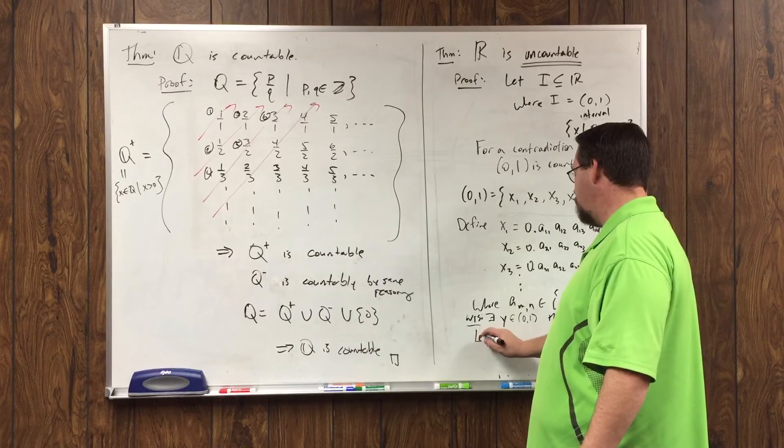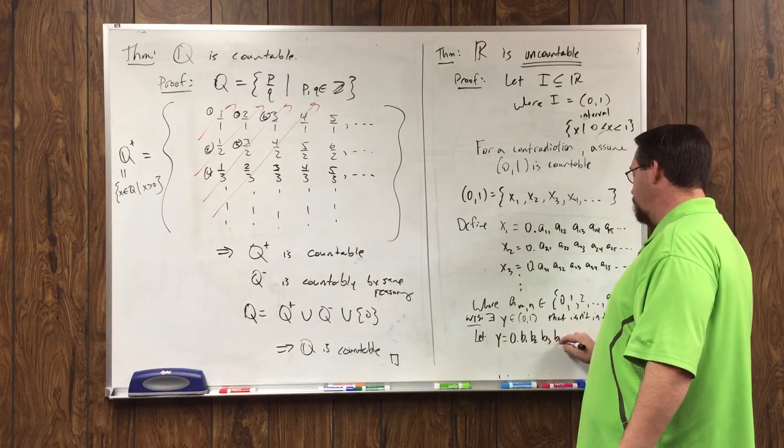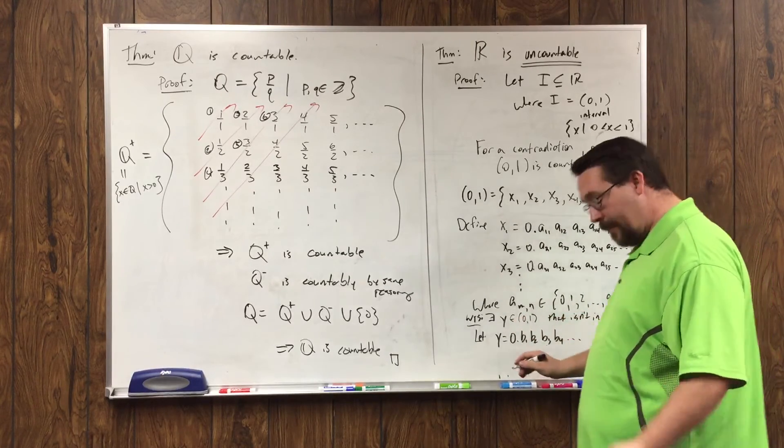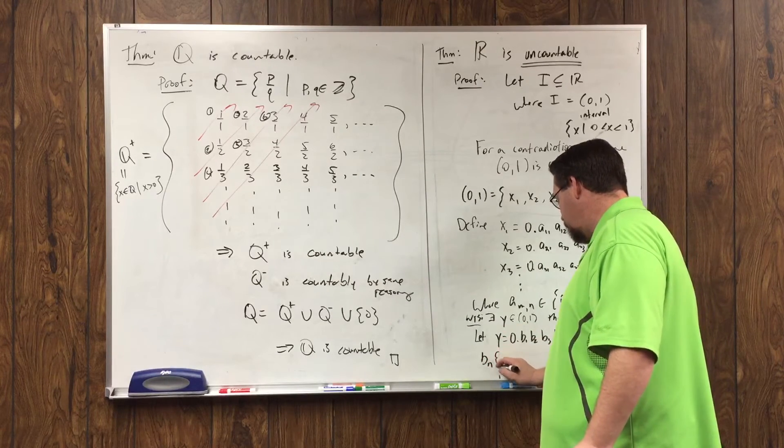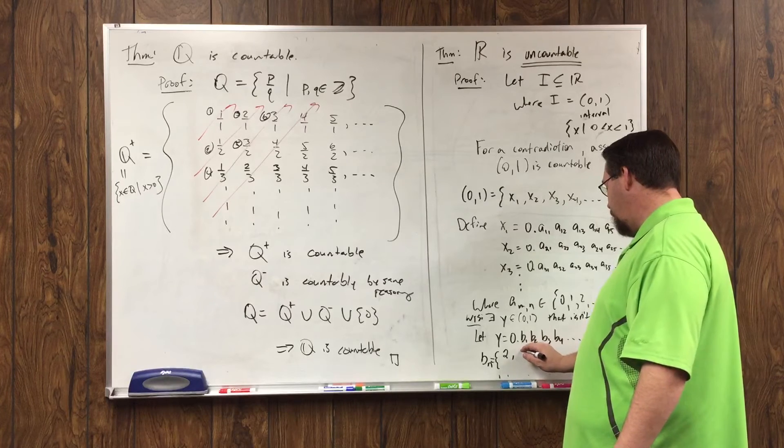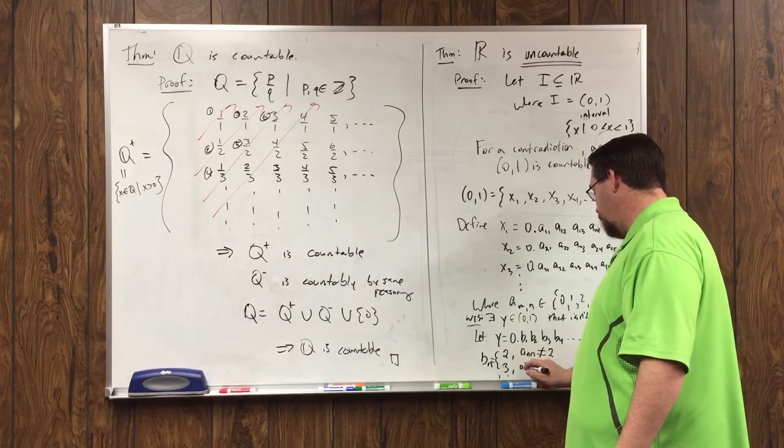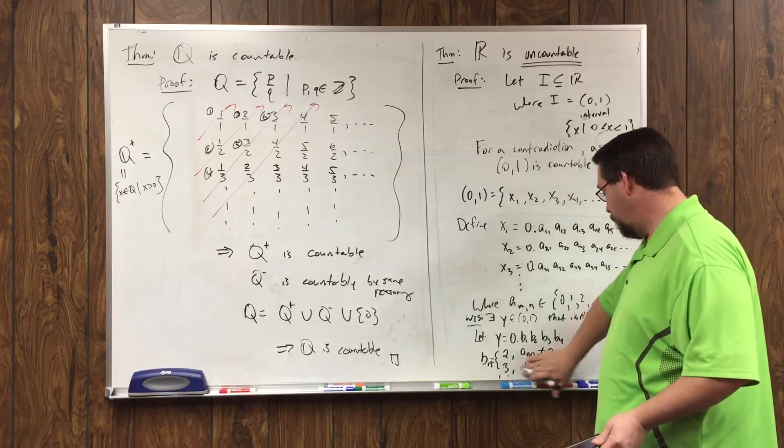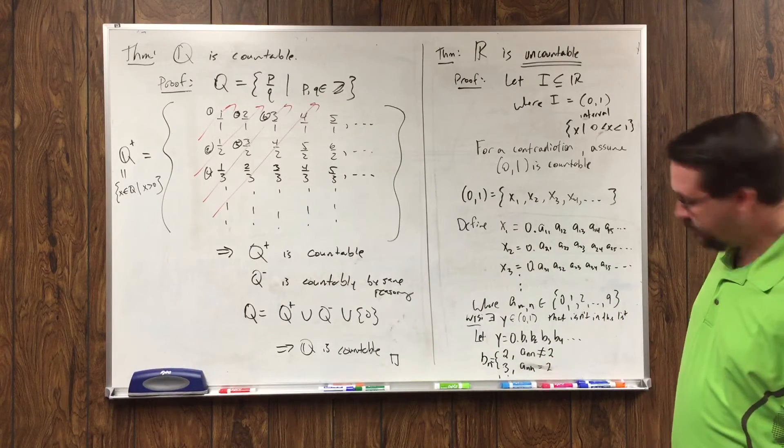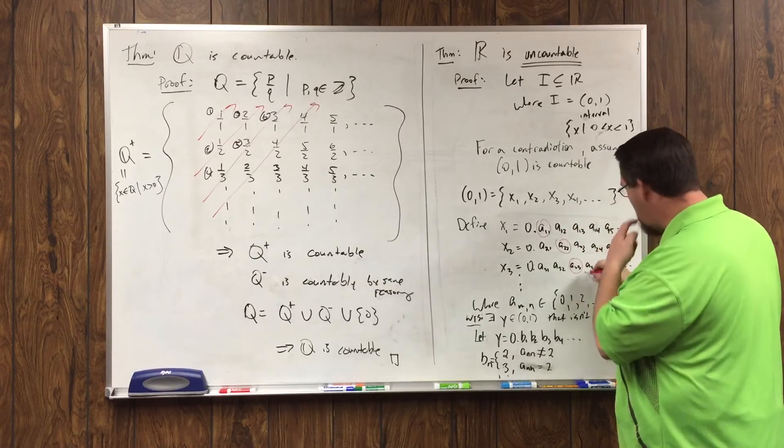So let's let y equal, and let's call its decimal expansion b1, b2, b3, b4, and so on. We don't know what these are yet, but let's try to find it. And I'm going to define b sub n as the number 2, that is, the digit here is number 2 if a_nn is not equal to 2, and I'm going to let it be 3 otherwise. In fact, I'll go ahead and write it. If a_nn is 2. Now, a_nn, notice, is so on.